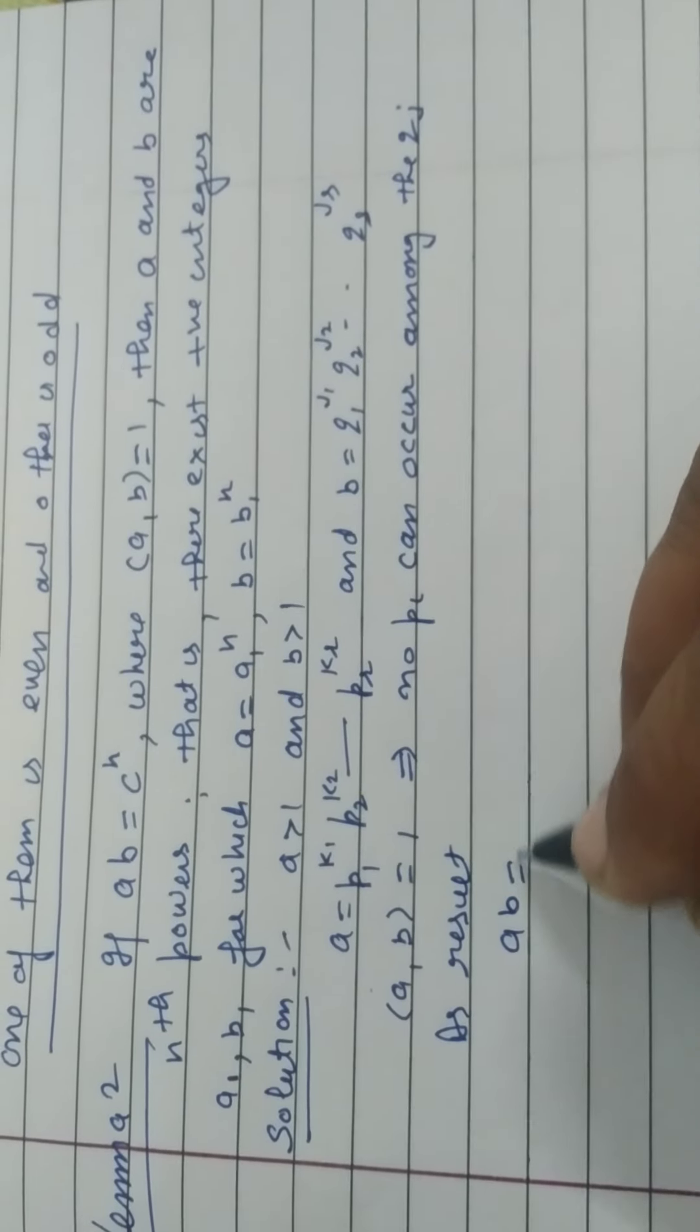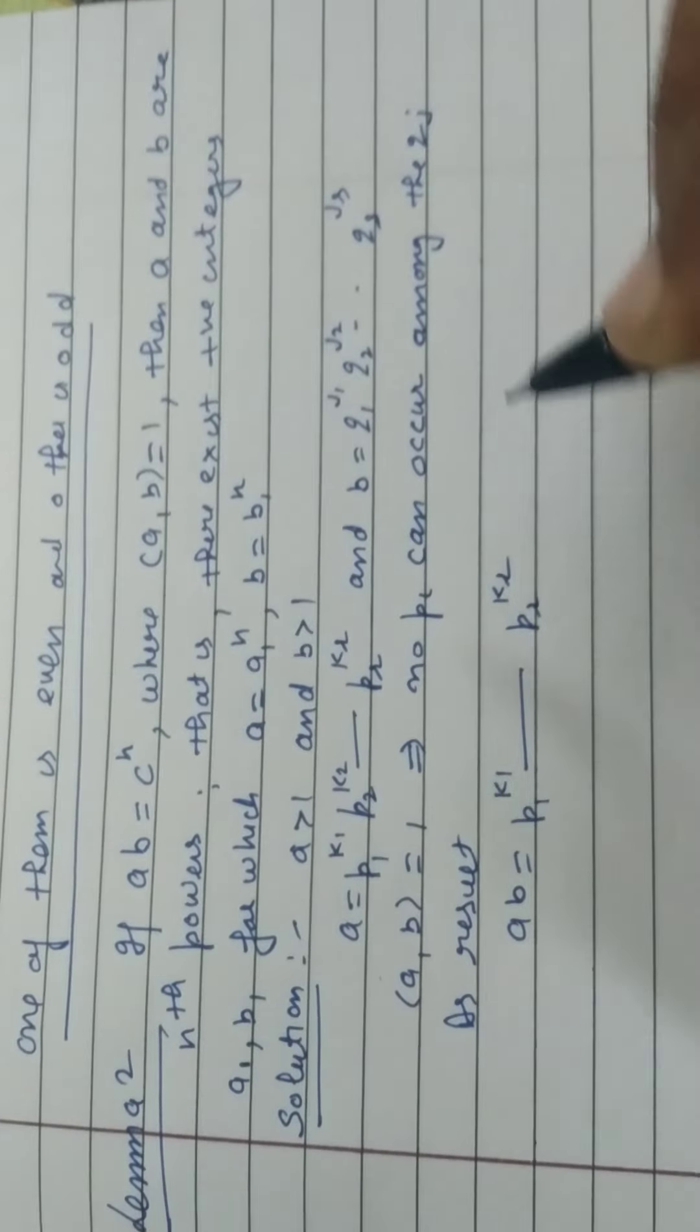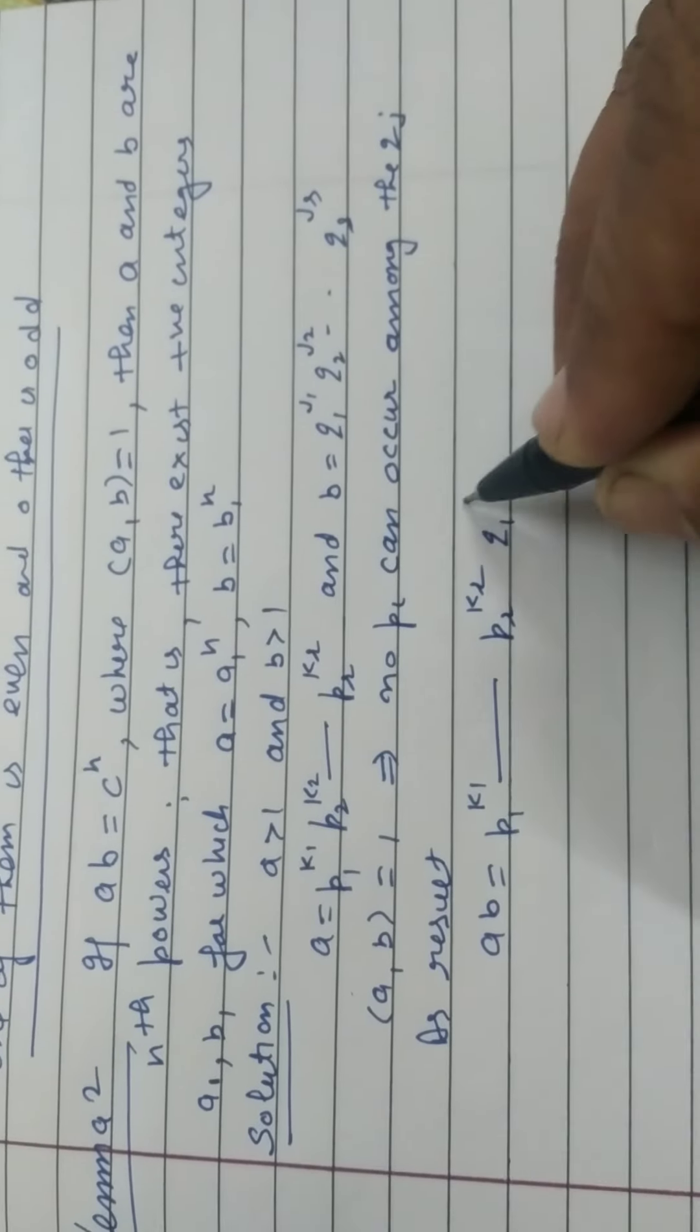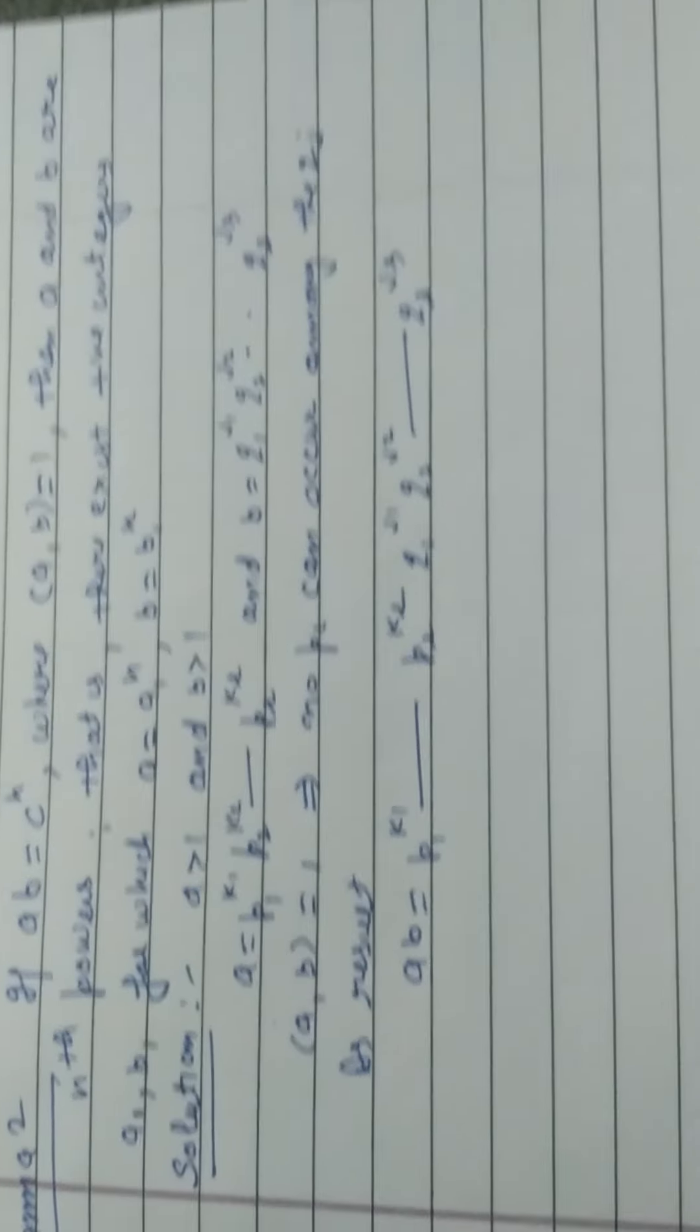AB is equal to P1 to the power K1, PR to the power KR, Q1 to the power J1, Q2 to the power J2, QS to the power JS. यह मिल गया.